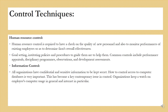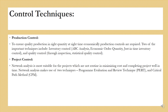Information control — all organizations have confidential and sensitive information to be kept secret. How to control access to computer databases is very important and has become a key contemporary issue in control. Organizations keep a watch on employees' computer usage in general and internet in particular. Production control — to ensure quality production in right quantities at right time economically. Two important techniques include inventory control — that is ABC analysis, economic order quantity, just-in-time inventory control — and quality control through inspection, statistical quality control, etc.